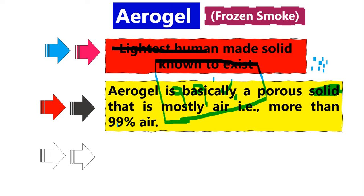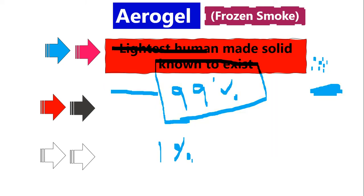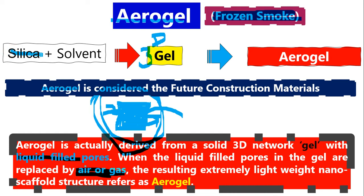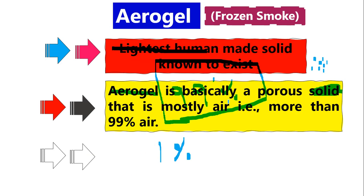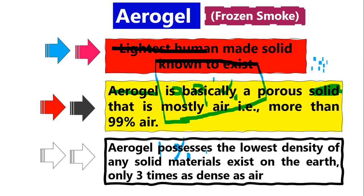More than 99% of aerogel is air, and only 1% is the actual solid material. One common type is silica-based aerogel — the same SiO₂. Because aerogel has so many pores, it has very, very low density — only about three times as dense as air. Since air itself is extremely light, aerogel is only three times denser. This makes it the lightest solid material.